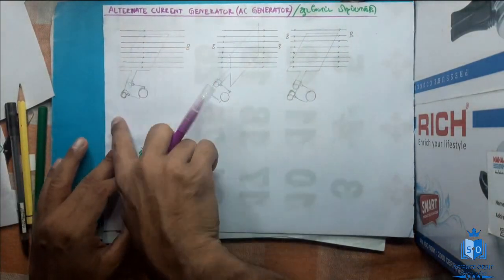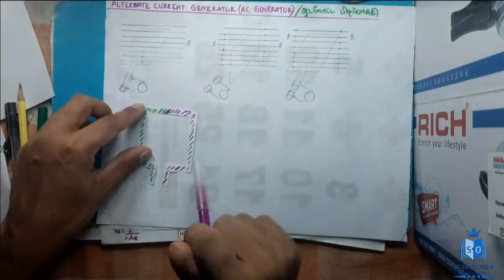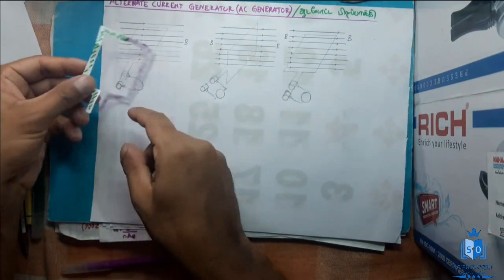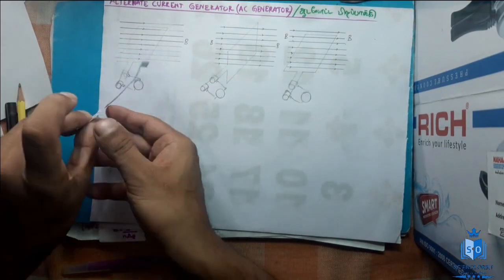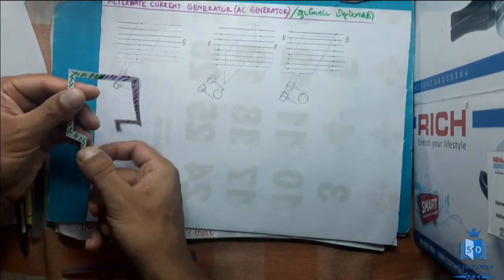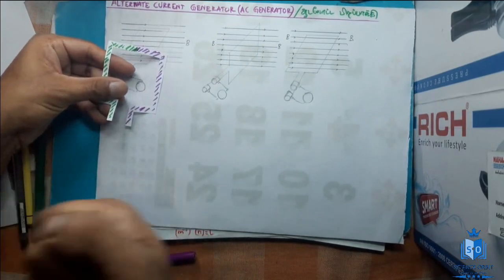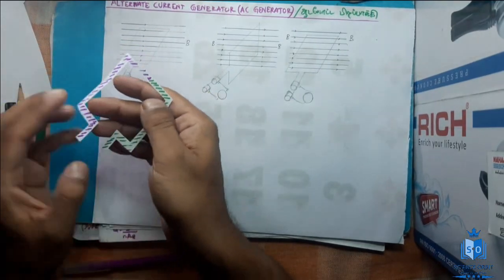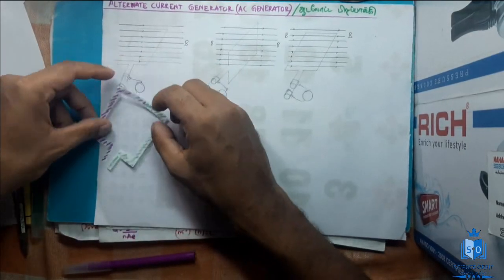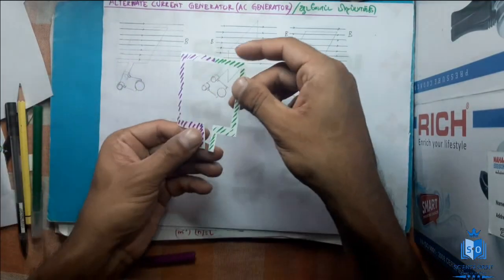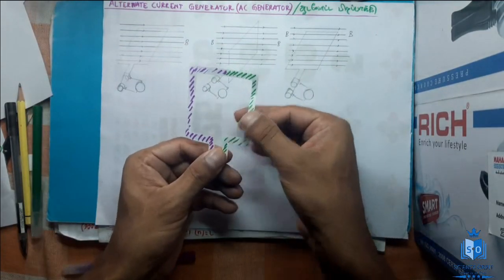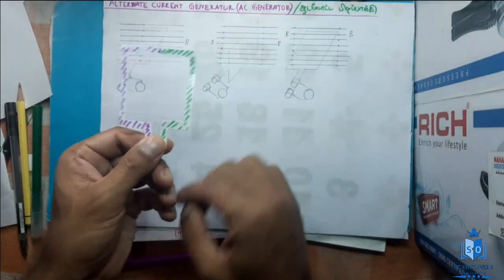Now, we somehow make this wire loop rotate. Let us say you have connected a handle to this and you rotate it. Imagine this is the rectangular wire loop — it will rotate like this. Initially, let us say it is flat, meaning the plane of this frame is parallel to the magnetic field.